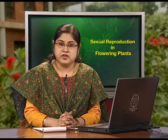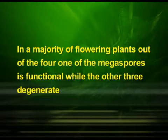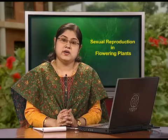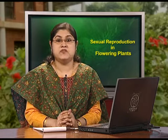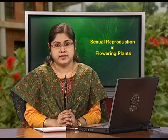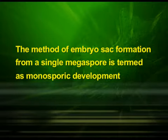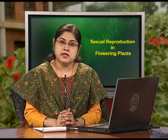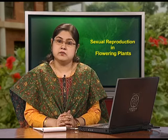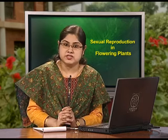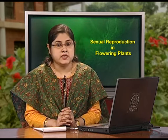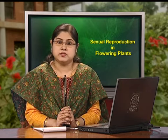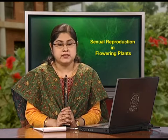Let us discuss the female gametophyte. In a majority of flowering plants, out of the four megaspores, one is functional while the other three degenerate. Only the functional megaspore develops into the female gametophyte or the embryo sac. The method of embryo sac formation from a single megaspore is termed monosporic development. The nucleus of the functional megaspore divides mitotically to form two nuclei, which move to the opposite poles, forming the two-nucleate embryo sac.